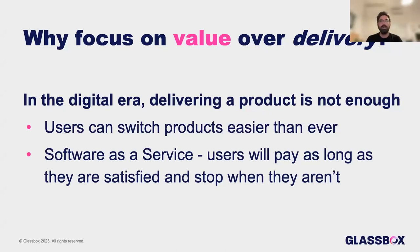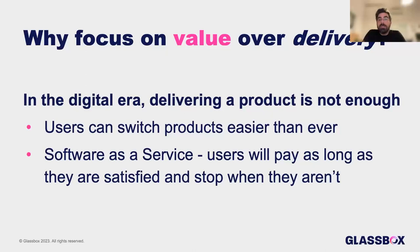So why do we want to focus on value and not delivery? We're living in a slightly different world than we used to. Not all products used to be fully digital in the past — we had desktop products, then web products — but also the business models of vendors in the tech ecosystem has changed. Today, a lot of vendors offer a software-as-a-service business model. In a SaaS business model, you pay a subscription as an end user and you pay only as long as you get value. It's not a one-time purchase. Users will pay as long as they are satisfied, but they will stop when they're not. And it's really become as easy as it gets today to switch products.